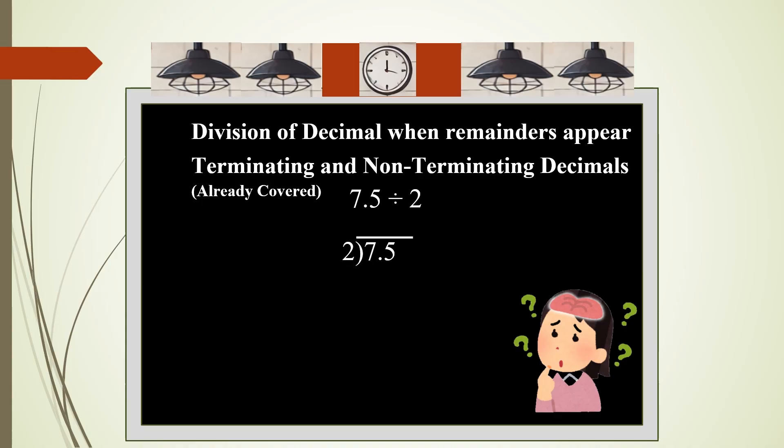Write it as usual: 7.5 divided by 2. 2 goes in 7 three times. 2 times 3 is 6, then subtract to get 1. Place the decimal in the quotient just above the decimal in the dividend. Bring down 5 and you get 15. 2 doesn't go exactly in 15, so we take 7. 2 times 7 is 14. When you subtract, you get 1. Here 1 is the remainder, so you add one 0 after 5 and bring down that 0. You get 10. 2 will go in 10 five times. 2 times 5 is 10. Subtract, you get 0. Therefore, 7.5 divided by 2 is 3.75.